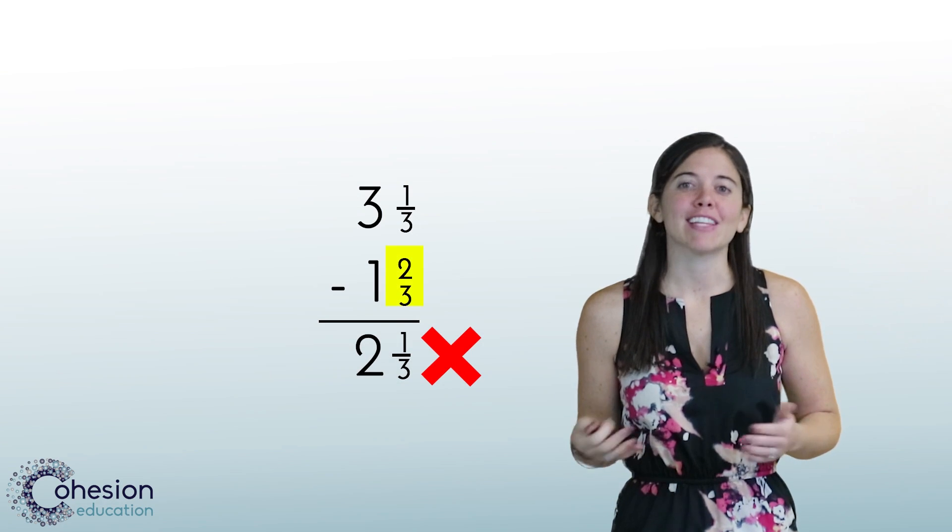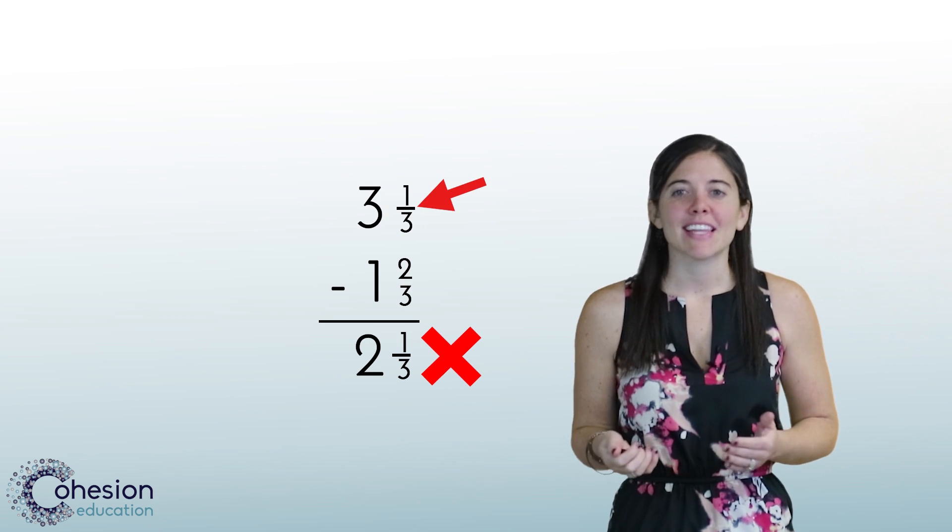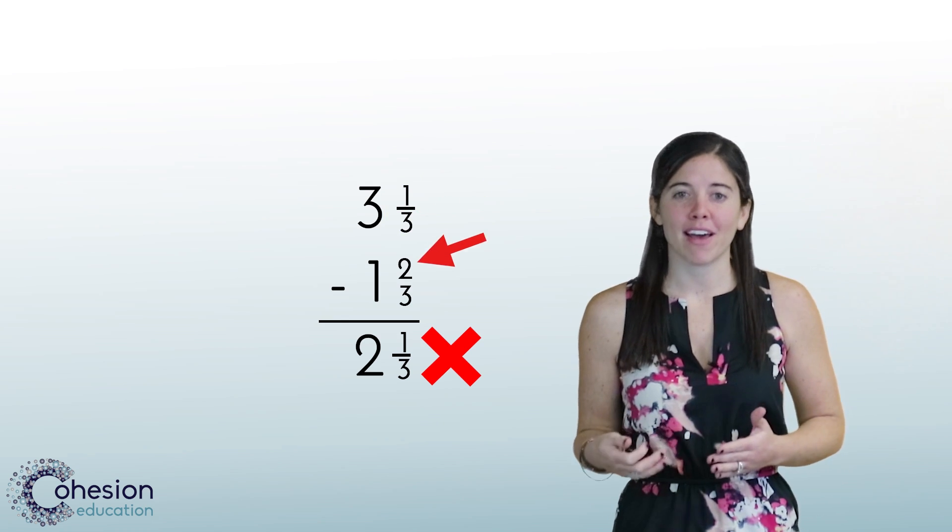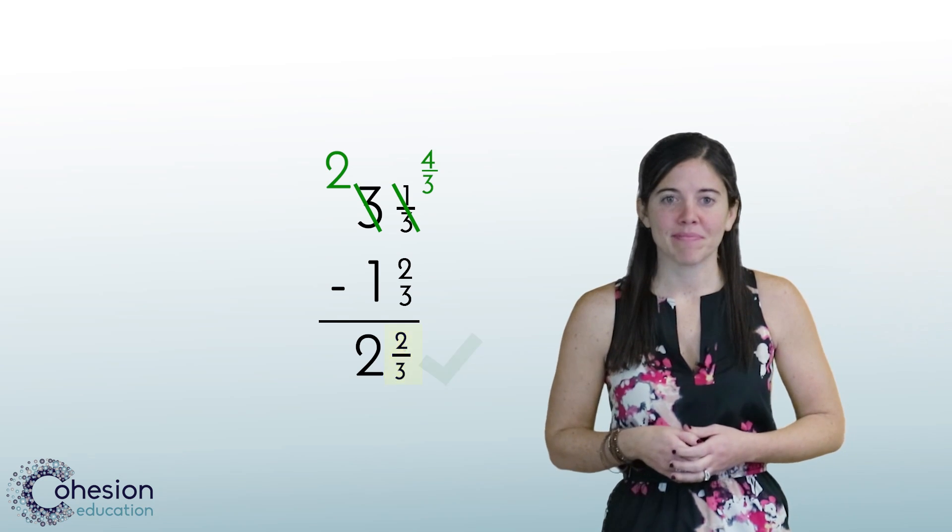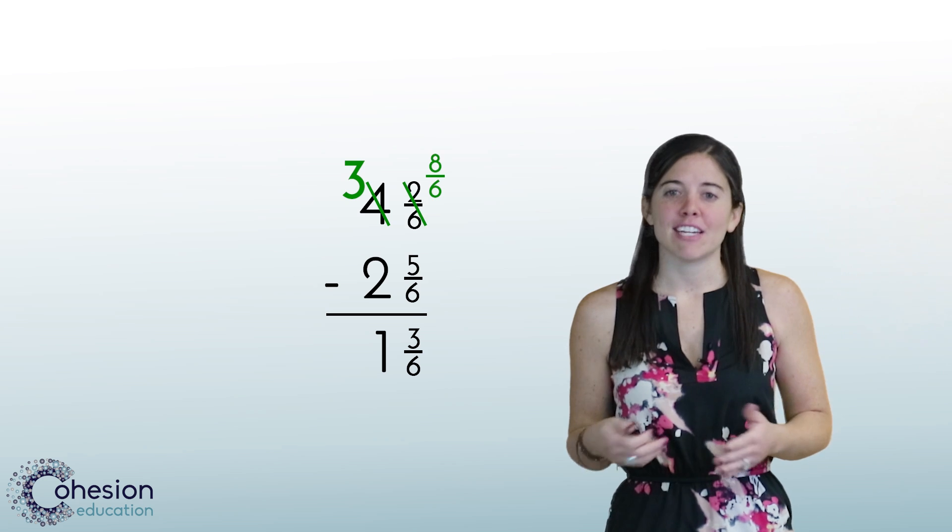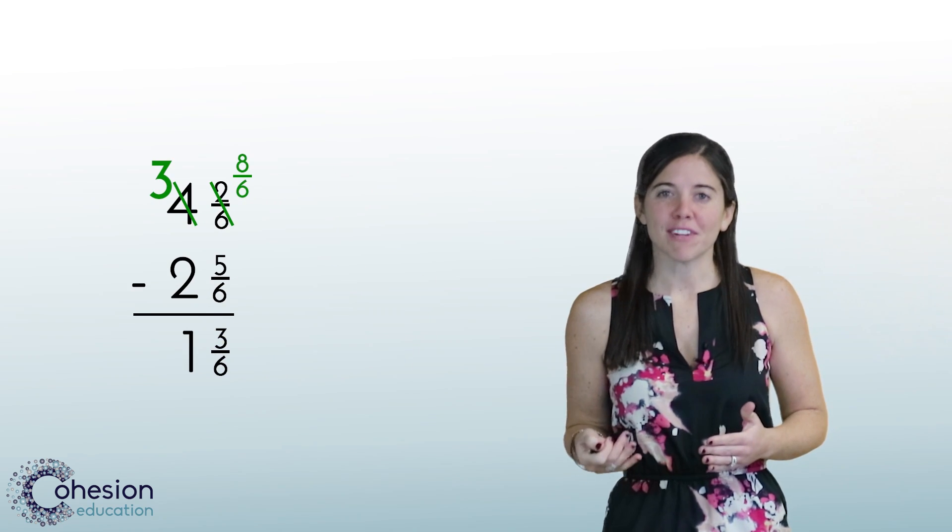Students may subtract the larger fraction from the smaller fraction instead of renaming. Remind students that they must always subtract from top to bottom. If they can't, they need to rename it to make it possible. Students may make simple computational errors when subtracting. Have students check over their work for silly mistakes.